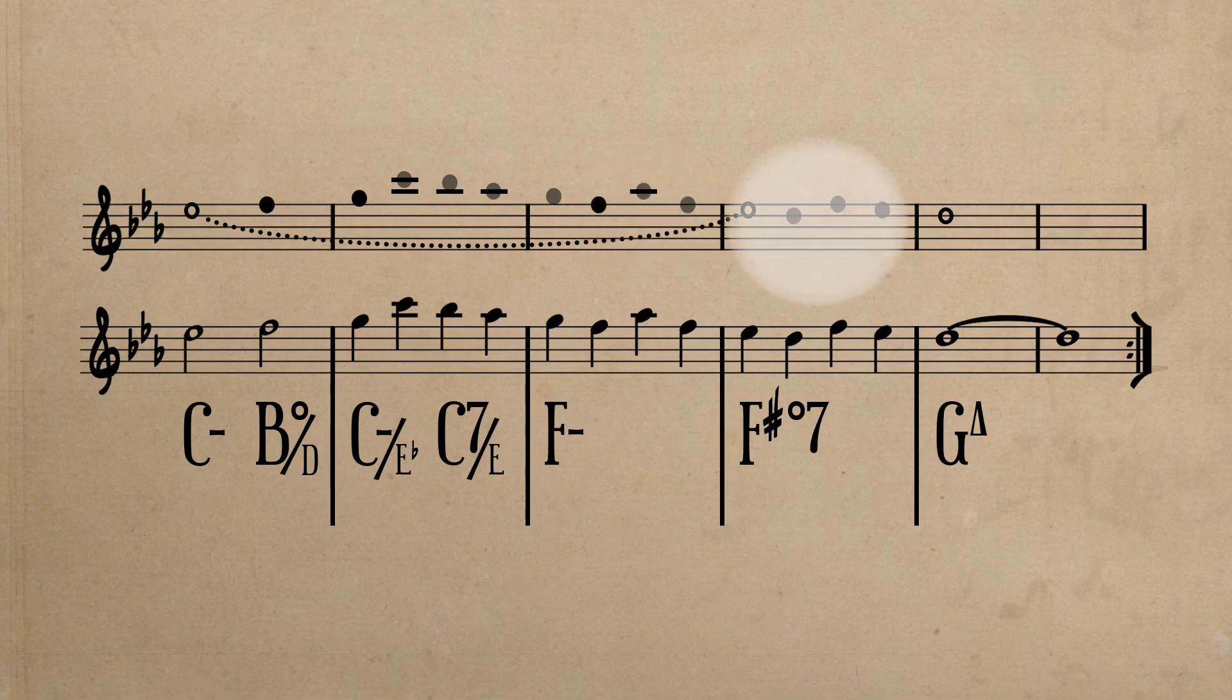Lastly, in the fourth measure, we hear E flat embellished by both its lower and upper neighbor tones D and F in that order. The presence of D will most likely push some to want to refer to this measure as D7 flat 9 over F sharp. This is certainly an acceptable interpretation, but I view it as F sharp diminished 7.